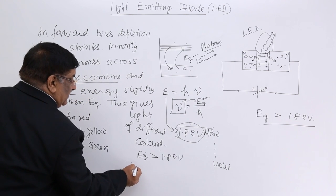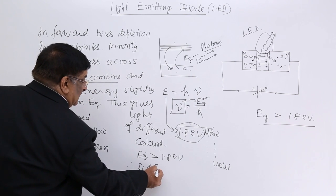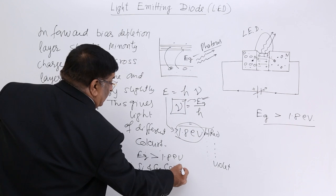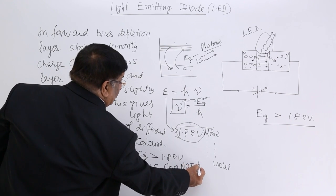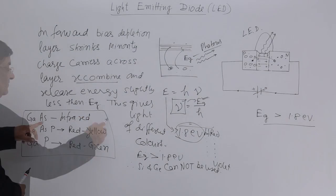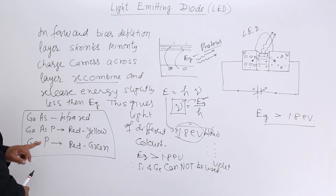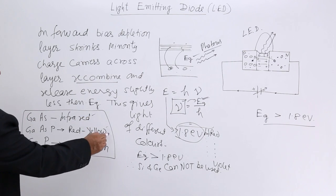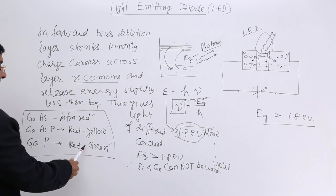And therefore silicon and germanium cannot be used. So what do we use? We use this, gallium arsenide, gallium arsenide phosphide, and gallium phosphide and many more like this which gives us different colors. Different energy levels.